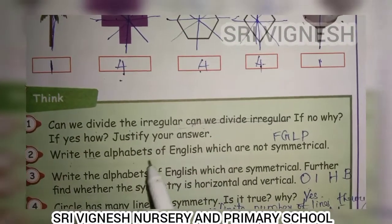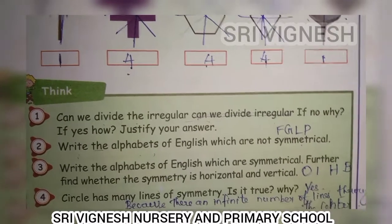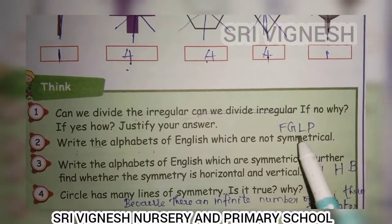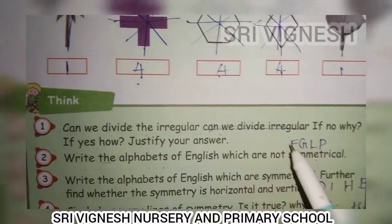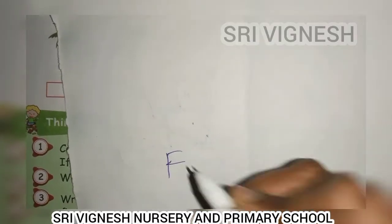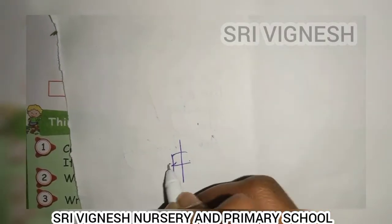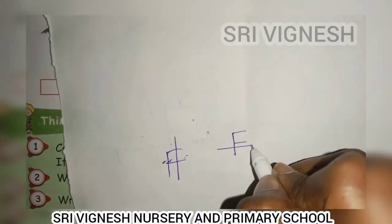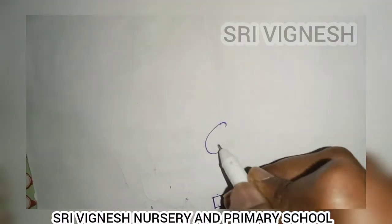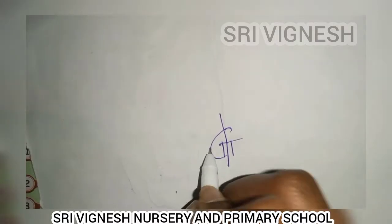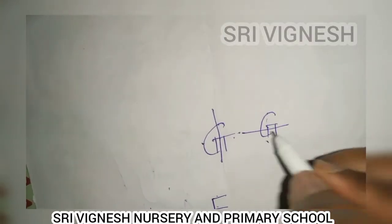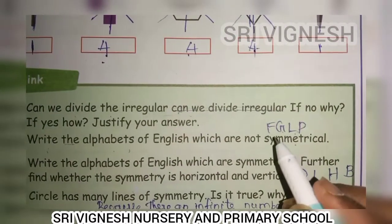Next, write the alphabets of English which are not symmetrical. We learn alphabets: A, B, C, D. How many alphabets are symmetrical? F is not. F, G, L, P, D — these letters are not symmetrical. G is not symmetrical. There is no symmetry apart from these. So from this example, L is also not symmetrical.